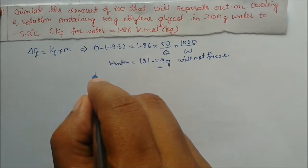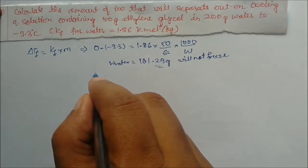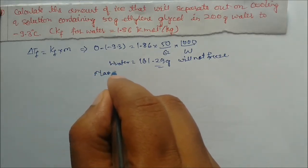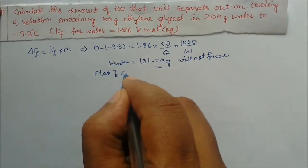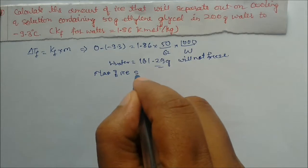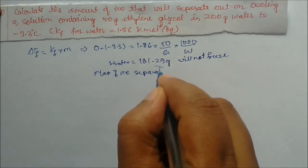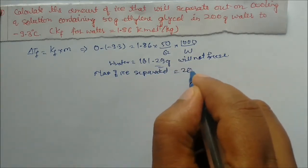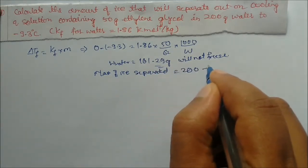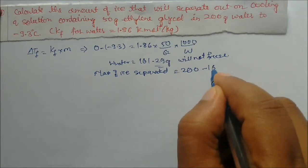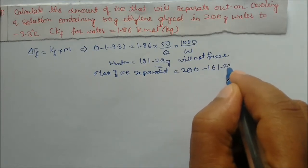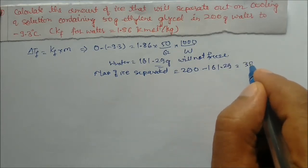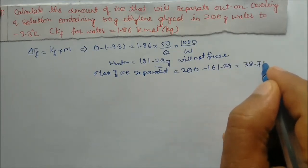Mass of ice separated = 200 − 161.29 = 38.71 grams. This is the answer.